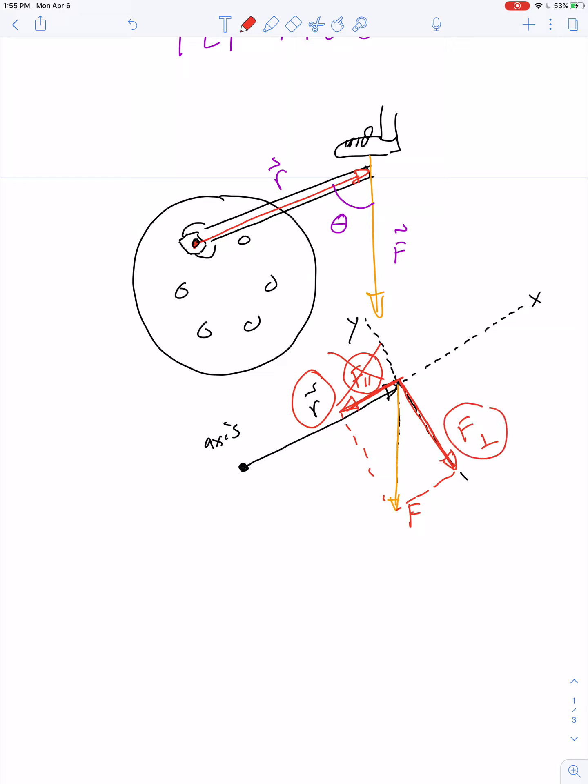It turns out this component of the force provides no torque. But this component is the one that provides all the torque. Torque is equal to the perpendicular component of the force multiplied by the lever arm.